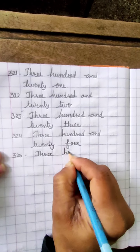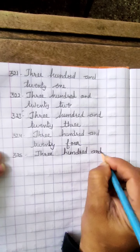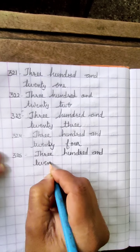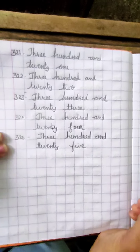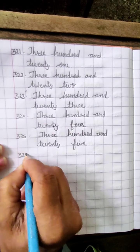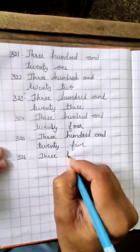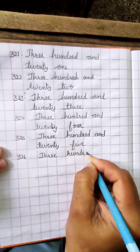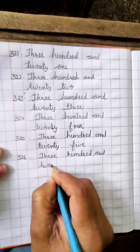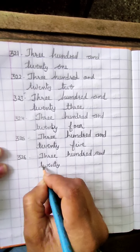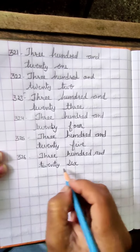THREE HUNDRED — T-H-R-E-E, H-U-N-D-R-E-D, 100 — AND T-W-E-N-T-Y F-I-V-E, 25. Three hundred and twenty-five, 325. THREE HUNDRED AND T-W-E-N-T-Y S-I-X, 26. Three hundred and twenty-six, 326.